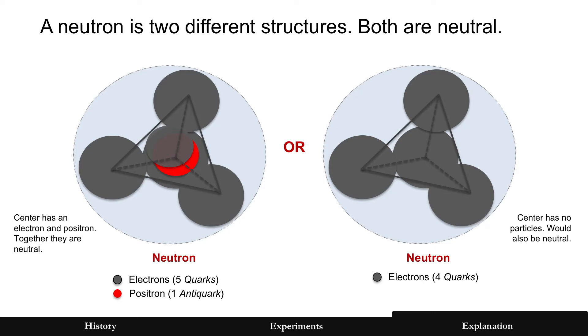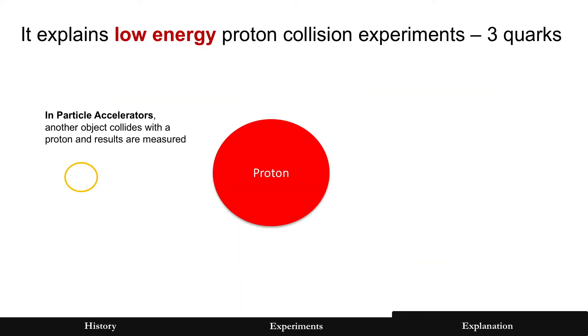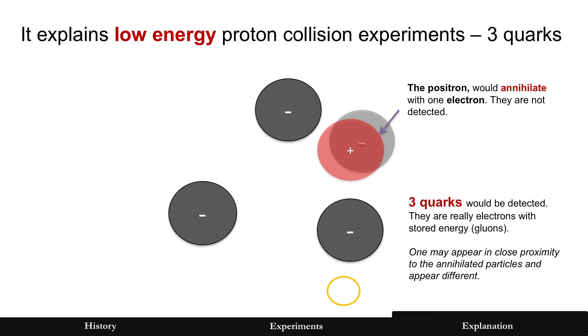Now, let's put this to the test. Does this fit all the pieces of the puzzle? So, first off, 1968, when quarks were first found and continue to be found in low-energy proton collision experiments, this is what happens. Particle accelerator would hit a proton, and because it's a pentaquark with low energy, the positron and electron in there would annihilate. They're still there. They're just not detected.